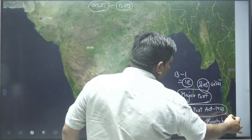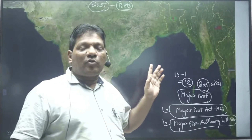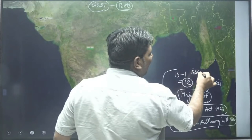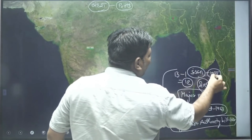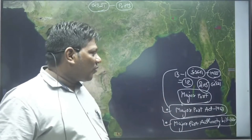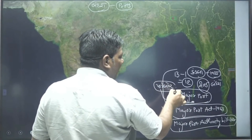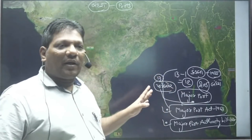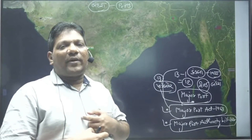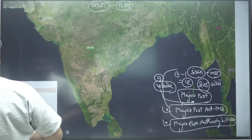In the Major Port Act, the first major port is Kandla. Every major port says one. One of our first major ports was created - that was Kandla. The first major port is Kandla. So the first major port is here in Gujarat. The name of the major port is Kandla Port.